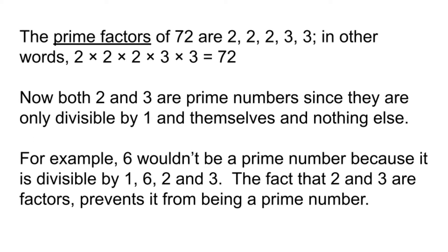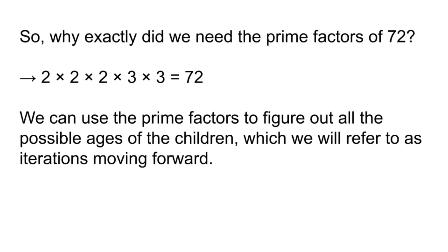For example, 6 wouldn't be a prime number because it is divisible by 1, 6, 2, and 3. 1 times 6 is 6, and 2 times 3 is 6. The fact that 2 and 3 are factors prevents it from being a prime number. So why exactly did we need the prime factors of 72?